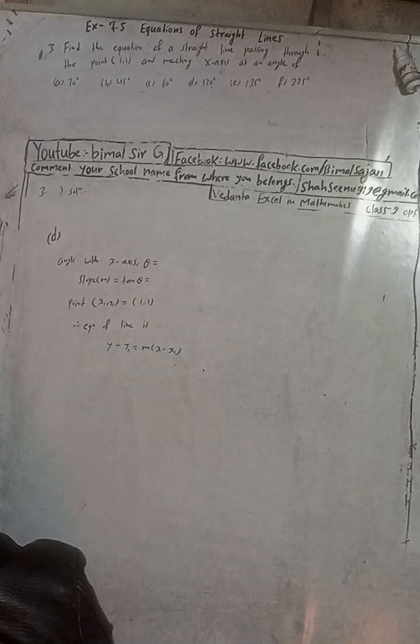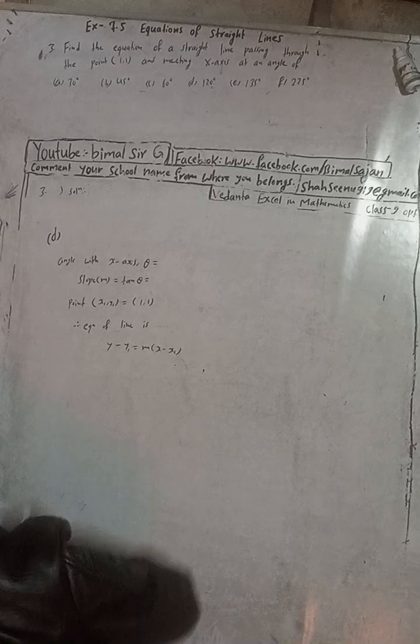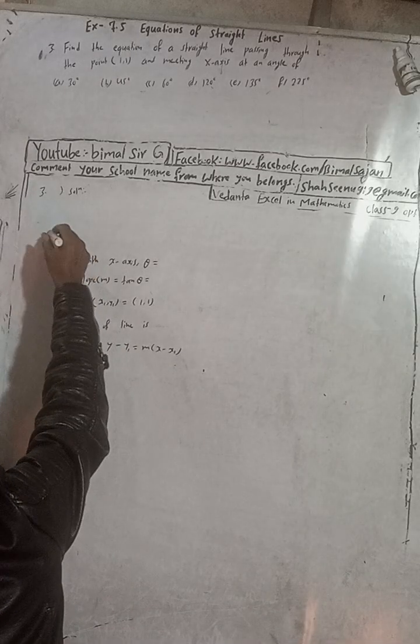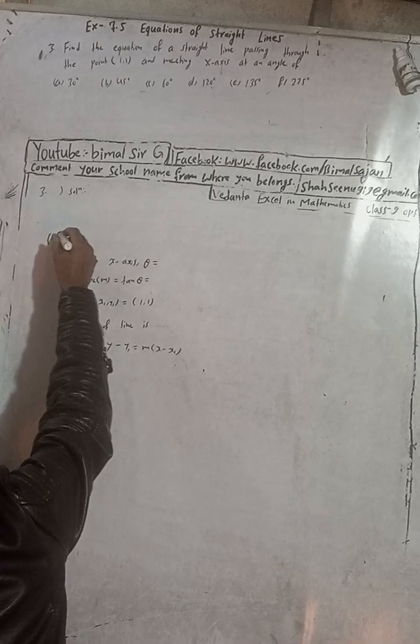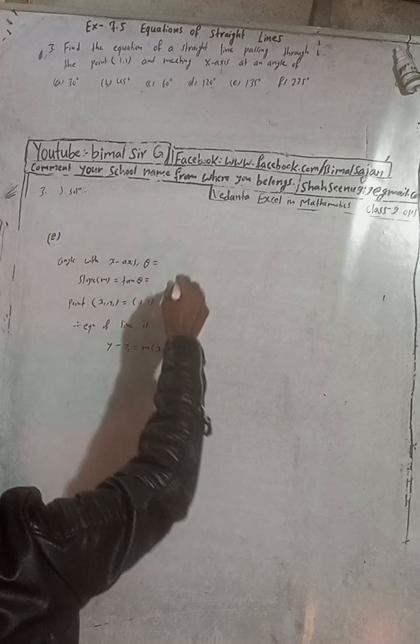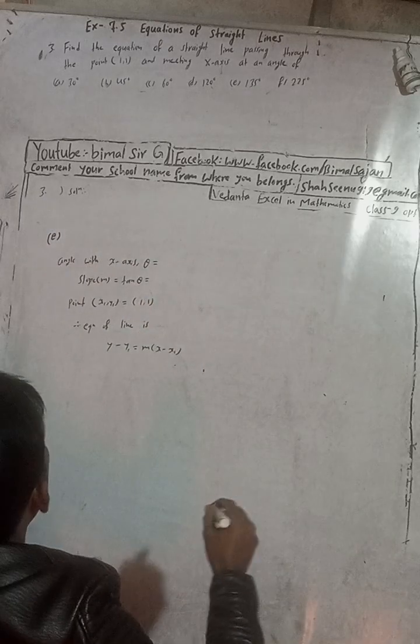For part (e), the angle with the x-axis is 135 degrees. Slope m equals tan theta equals tan 135 degrees.